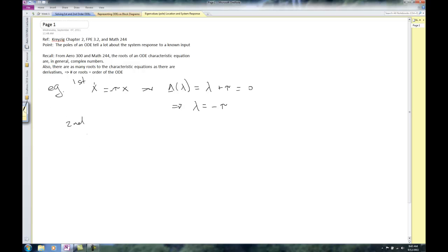Second order, we end up with things like lambda squared plus b lambda plus c equals zero. That has roots given by the quadratic equation: negative b plus or minus square root of b squared minus 4ac.